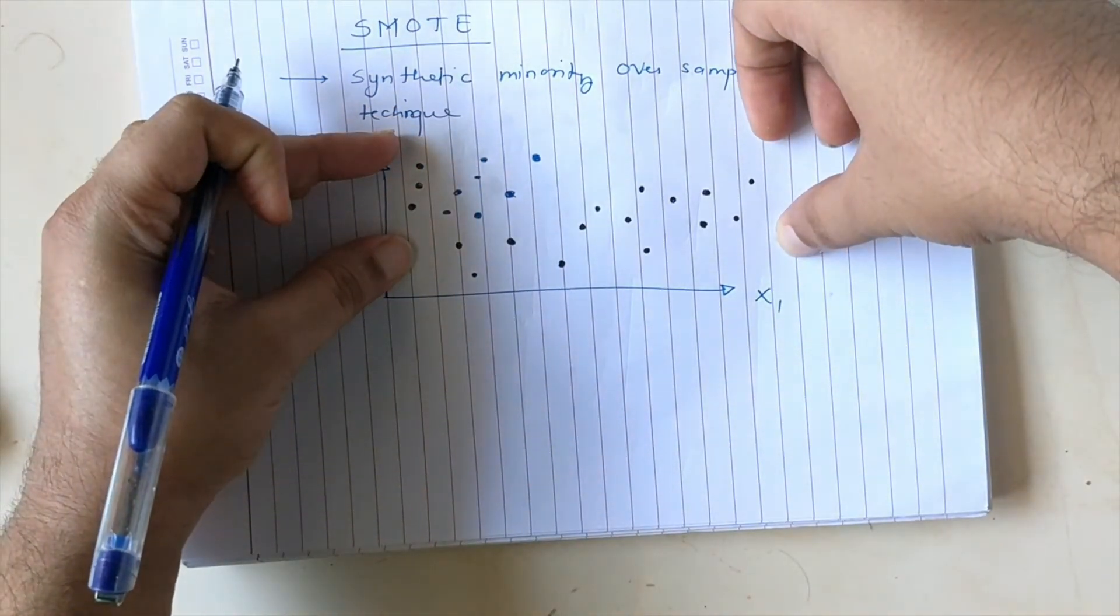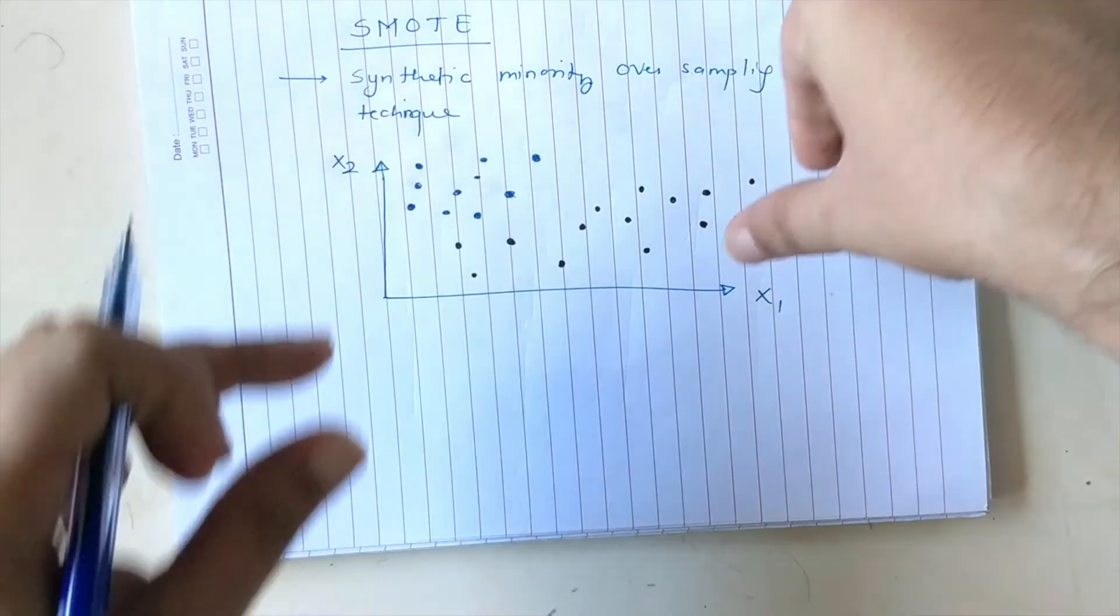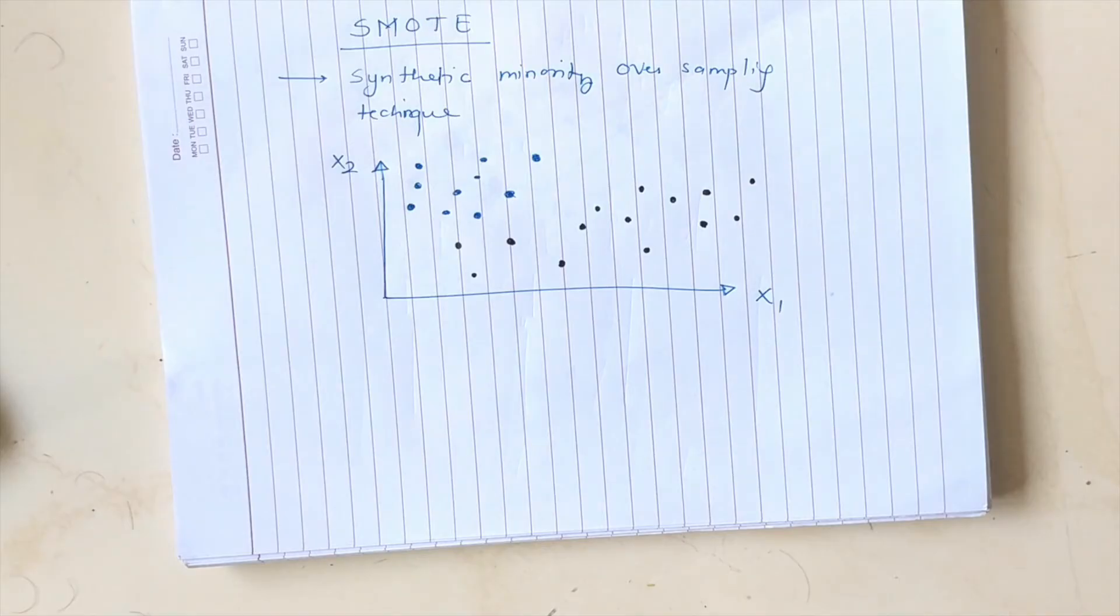Now this ratio is almost 50-50. You have equal number of blue samples and equal number of black samples. So you can specify how many artificial samples you want to grow in SMOTE so as to match up with your majority class.